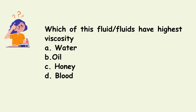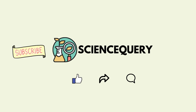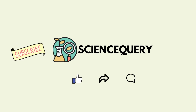Now the final question: which of these fluids has the highest viscosity — a) water, b) oil, c) honey, or d) blood? The answer is honey — honey has the highest viscosity as it is the thickest among all these fluids. That is all about high viscosity and low viscosity. If you like my video, please subscribe to my channel Science Query, and please like, share, and comment. Thank you.